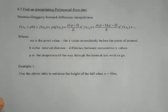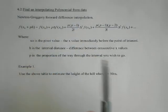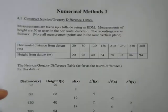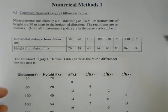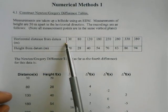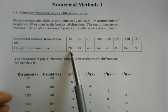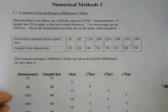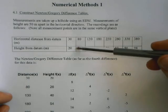Okay, the aim here is to create what we call an interpolating polynomial from our data. So the data that we started with is on the first page here. So we had horizontal distance from a datum and we measured the height from that as well.